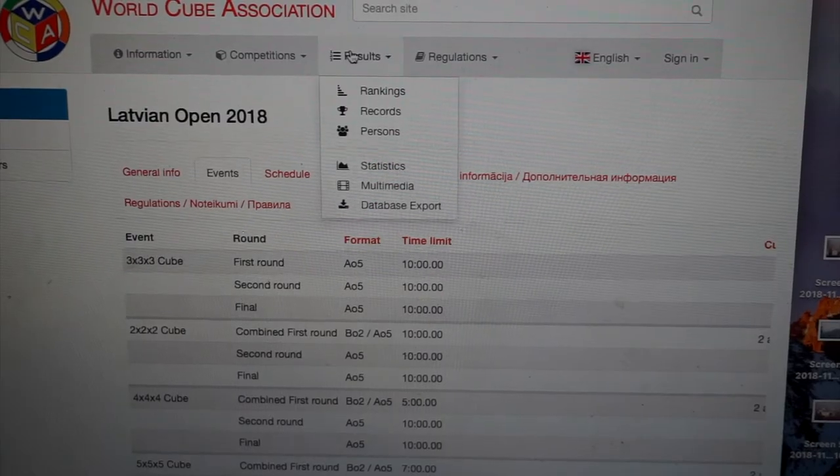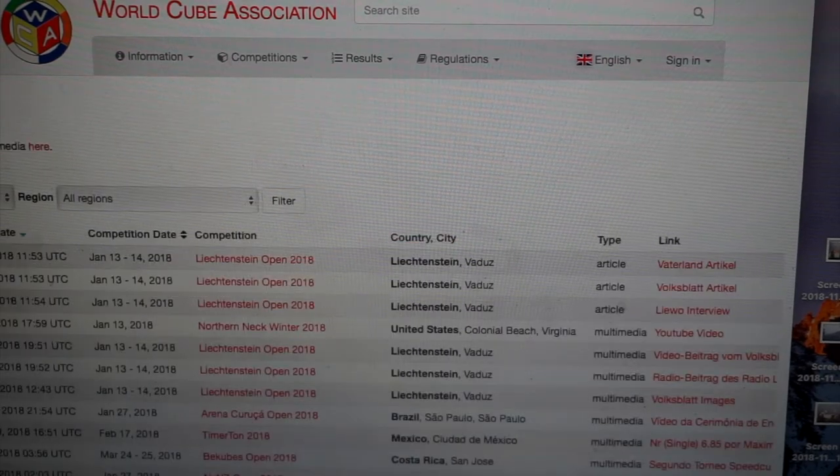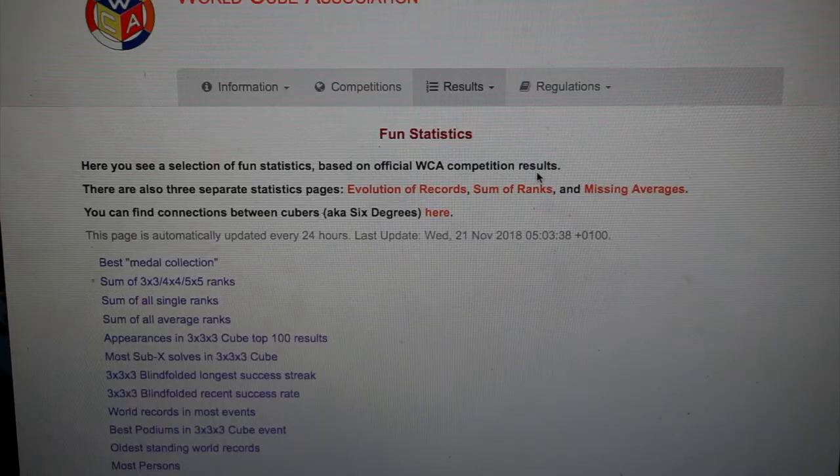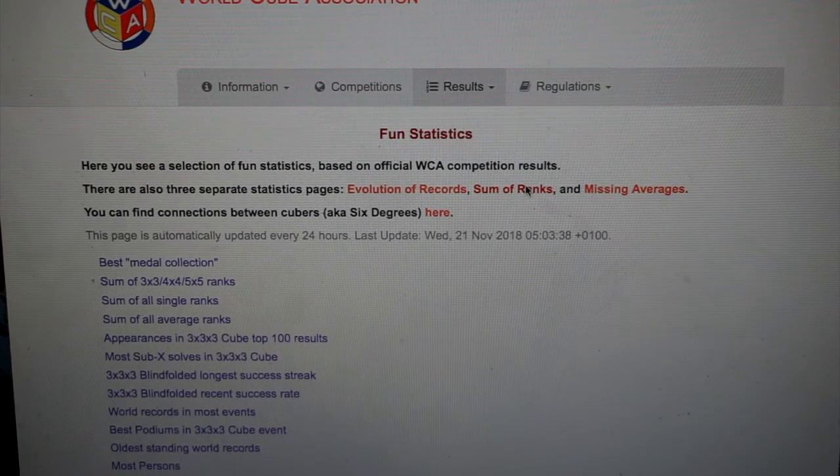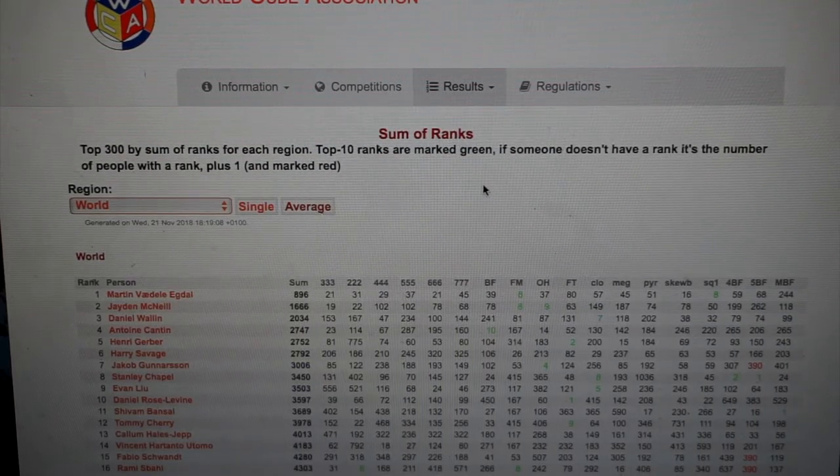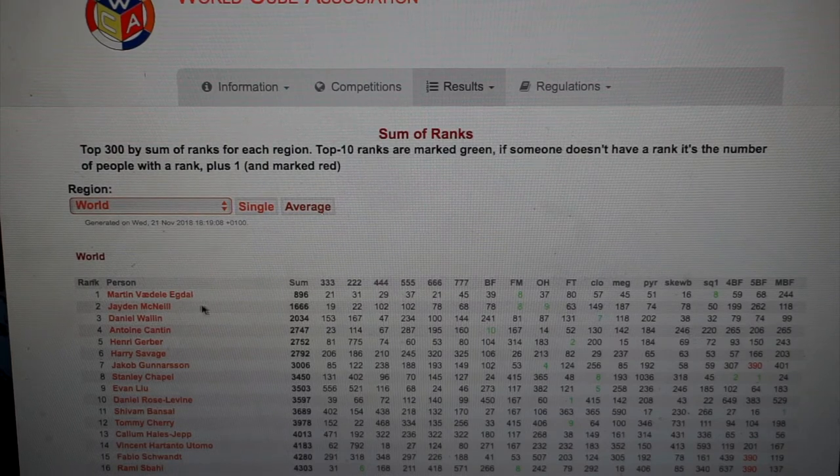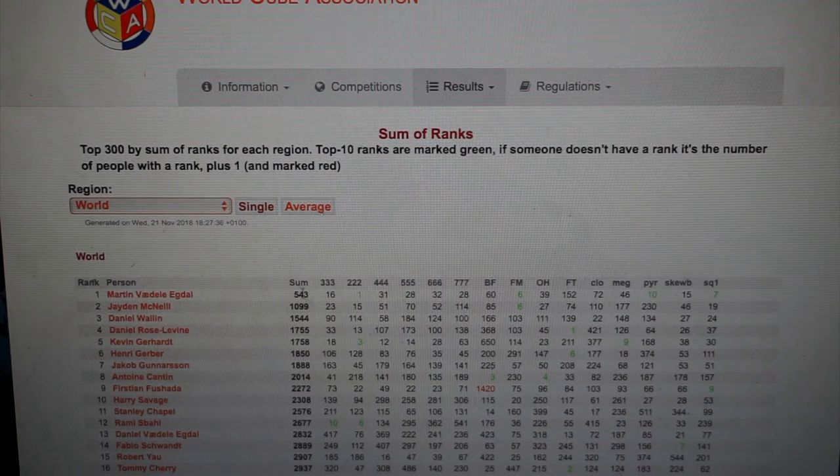And I hope you're coming as well. And yeah, my last goal that I would like to get is we go to results. And not multimedia. Come on, who goes to multimedia? Statistics. If you want to see how good you are in cubing, click on sum of ranks. Basically this will show who is the world's best cuber. As you can see in single Martin Edghal is dominating. And in average he's also beasting it.